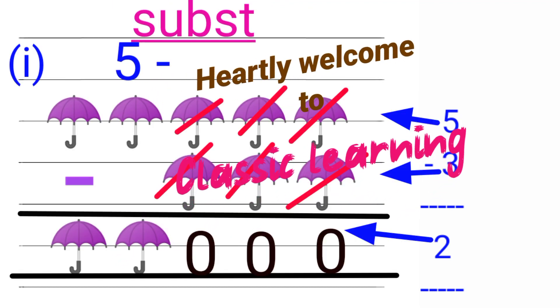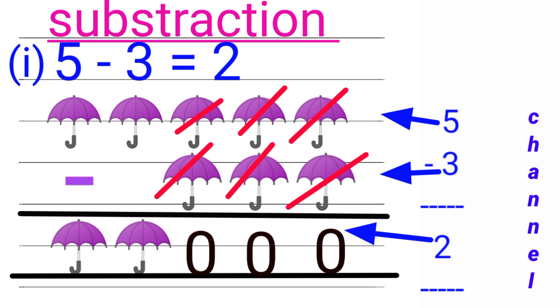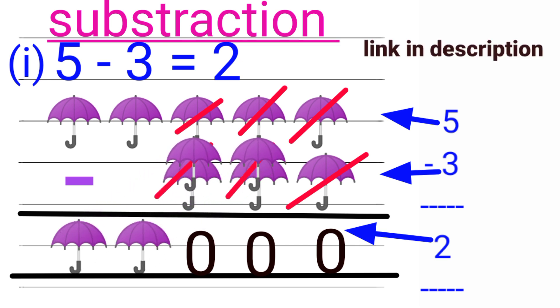Subtraction. First one: 5 minus 3 equals 2. If I have five umbrellas with me and I gave you three umbrellas, how many left with me? Only two, so our answer is 2.